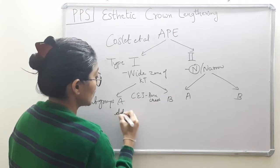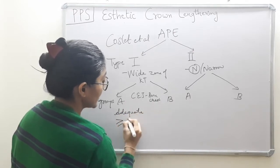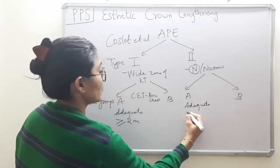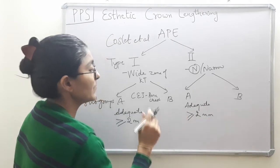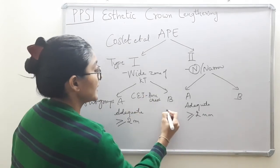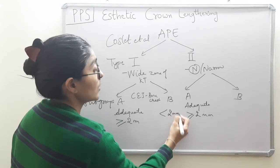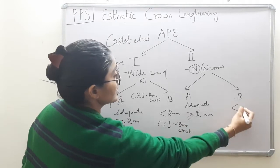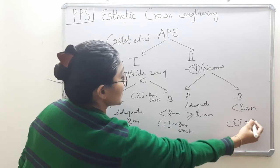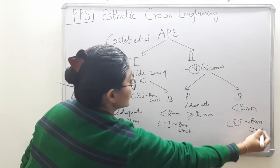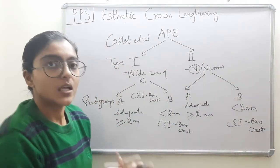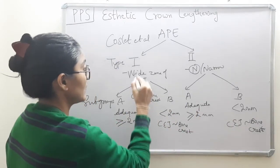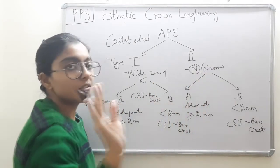Subgroup A and B are based on the distance between CEJ and bone crest. If that distance is greater than or equal to 2 mm, it is subgroup A. If it is less than 2 mm, or the bone crest and CEJ are at the same point, then it is subgroup B. Based on these four categories — type 1A, 1B, 2A, and 2B — the treatment varies.